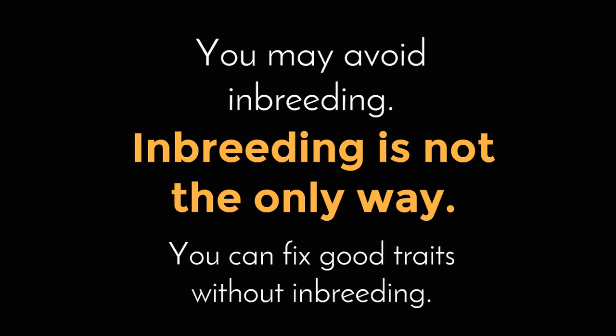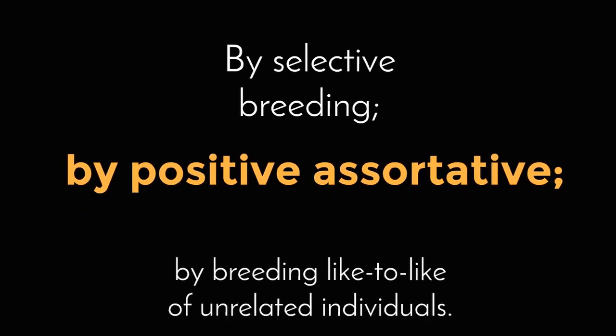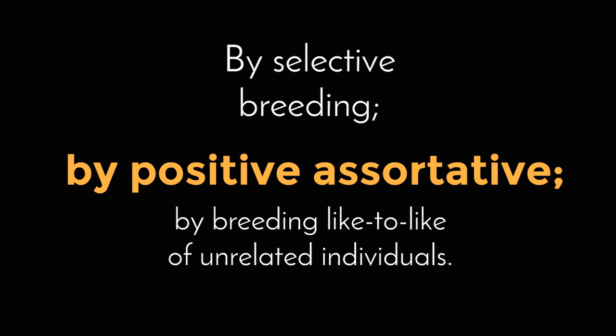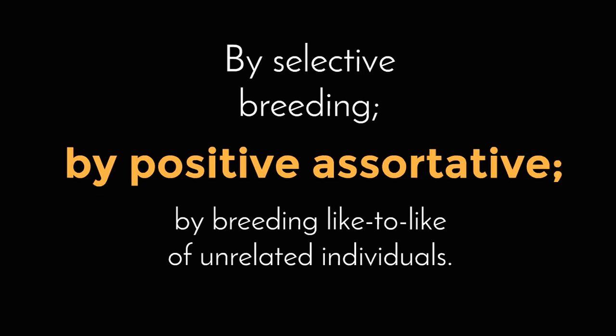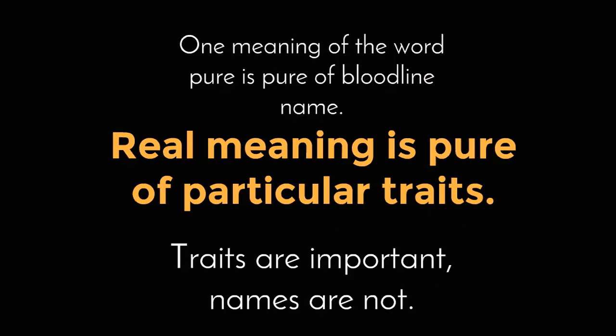Inbreeding is not the only way of purifying desirable traits. You can purify good traits without resorting to inbreeding, and there are advantages to it. You can make desirable traits homozygous or predominant by selective breeding — by positive assortative mating, or mating like-to-like of unrelated individuals. If you do this, you reduce the risk of unseen identical deleterious alleles, as in the case of related individuals. However, because you select for the desired traits, you are nonetheless assured that these traits are common in the individuals you mate, and can become homozygous or preponderant even if these individuals are not related.